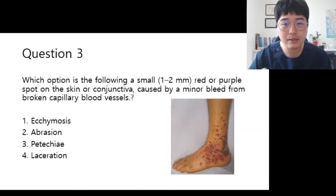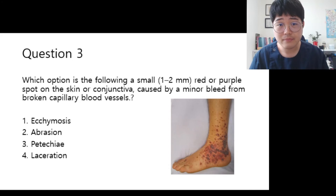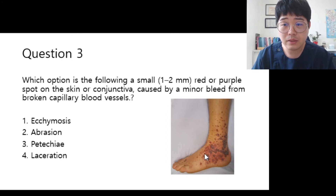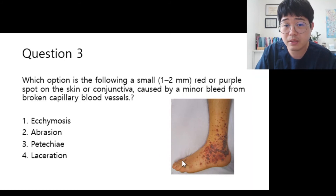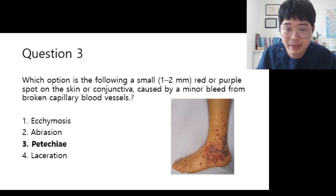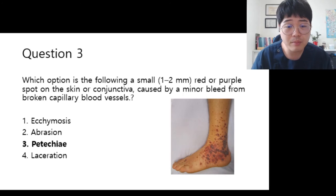I'll give you 50 seconds to answer these questions. The picture shows small, tiny red or purple spots on the skin. And there is a minor bleed from broken capillary blood vessels. It's called petechia. Petechia — tiny red or purple hemorrhagic spots on the skin.